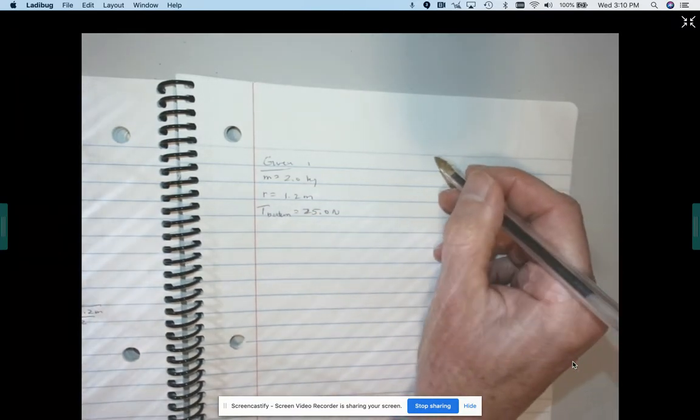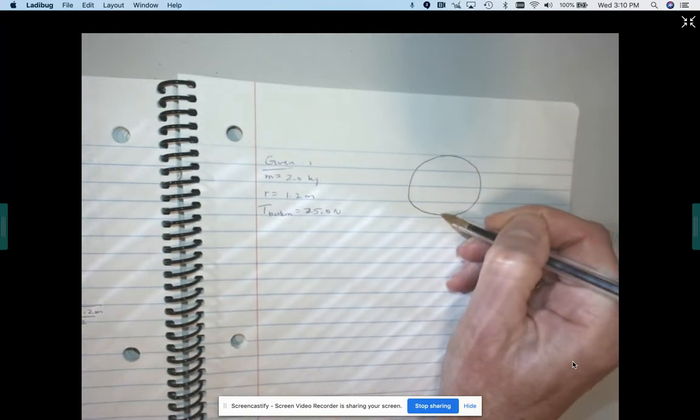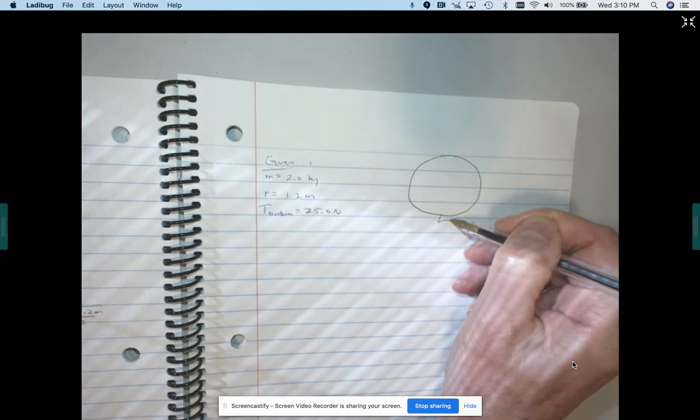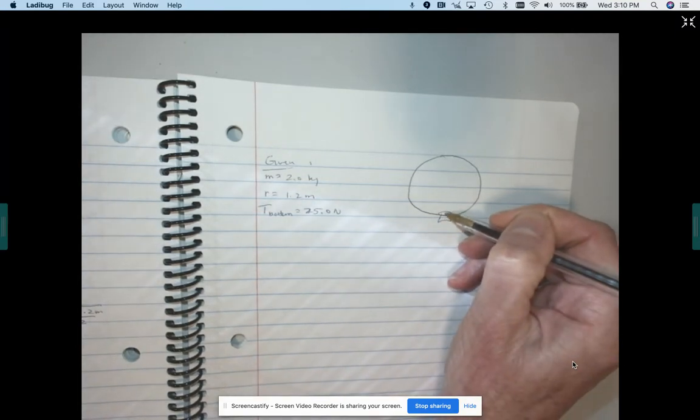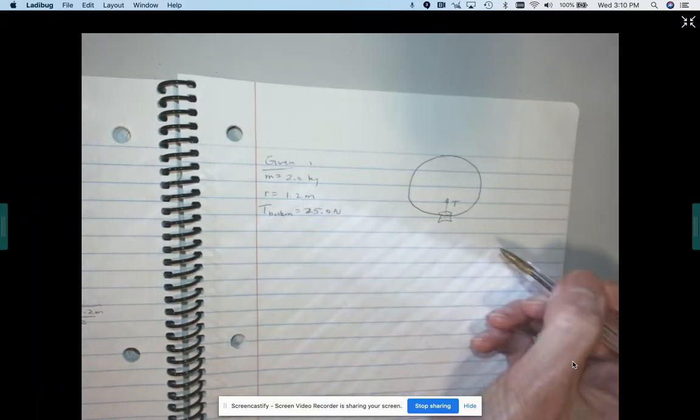And here is our circle. We can kind of sketch that out. It is a vertical circle. We have a bucket going around. There is some tension at the bottom and then we are going to look at the top too.